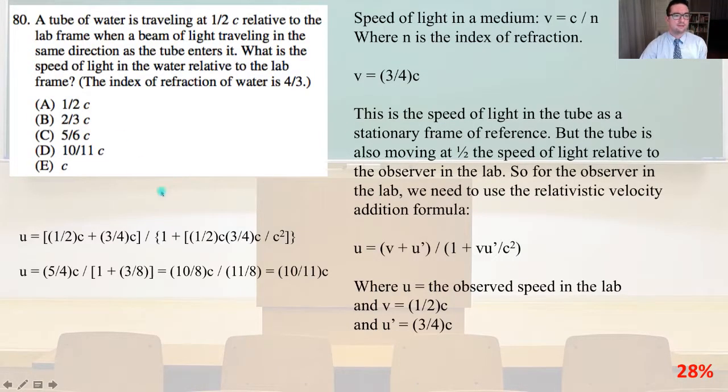Number 80. A tube of water is traveling at 1 half c relative to the lab frame when a beam of light traveling in the same direction as the tube enters it. What is the speed of light in the water relative to the lab frame? The index of refraction of water is 4 thirds. So the speed of light in a medium, v equals c divided by n, where n is the index of refraction, so v is going to equal 3 fourths c.